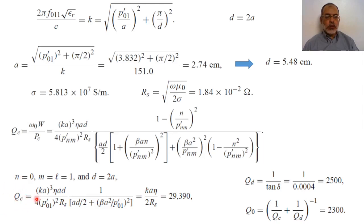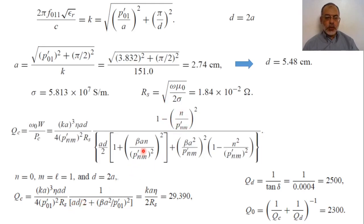After simplification, the quality factor due to conductor loss becomes Qc = k·a·η / (2·Rs), where η = 377/√εr is the wave impedance in the dielectric, εr = 2.08. The expression also involves terms with (a² + d²) / (4·(p'₀₁)²·Rs) and β·a² / (p'₀₁)², with the n-dependent term eliminated since n = 0. Here p'₀₁ = 3.832 and Rs = 1.84 × 10⁻² Ω.